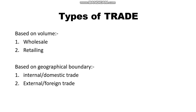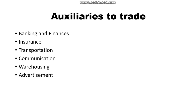So now you have understood what trade is, types of trade — based on volume and geographical boundaries: internal trade, external trade, export, import, wholesaling, retailing — and also auxiliaries to trade, which means all activities that facilitate trade: banking and finances, insurance, transportation, communication, warehousing, and advertisement. Go through all these videos deeply and listen to the practical day-to-day examples given, because understanding business studies concepts only by reading books is not enough.